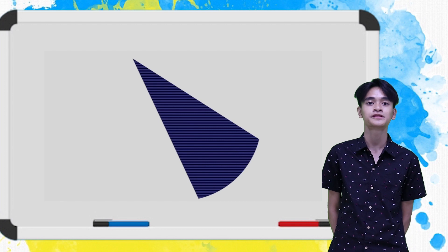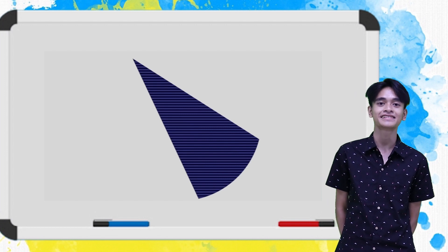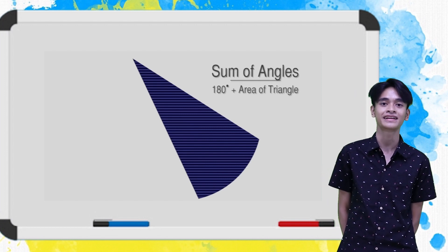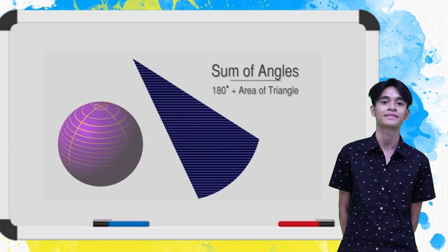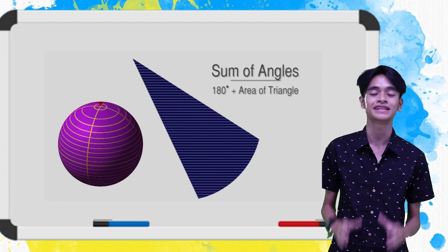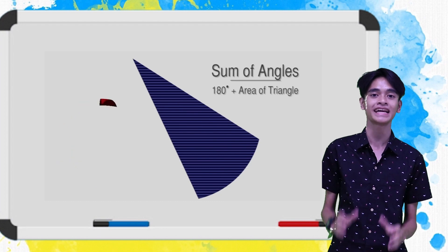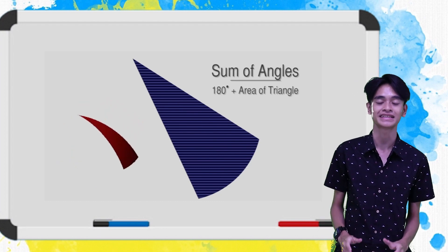Because of the curved surface of the sphere, the angles in this triangle do not add to 180 degrees as the sides appear to be curved. Geometers discovered that the sum of the angles is equal to 180 degrees plus the area of the triangle.